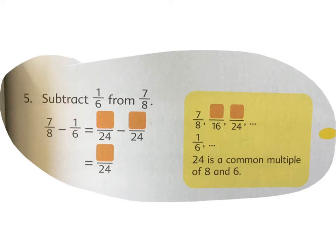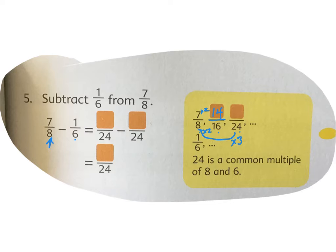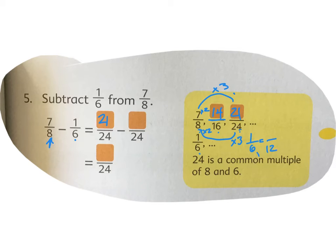Now we're going to subtract one sixth from seven eighths. What they did is find equivalent fractions by taking the bigger denominator and finding equivalents. Seven eighths is the same as how many sixteenths? Multiply by two — fourteen sixteenths. Six doesn't go into sixteen, so we continue. Eight times three equals twenty-four and seven times three equals twenty-one — that's a common multiple. So now we have twenty-one twenty-fourths.